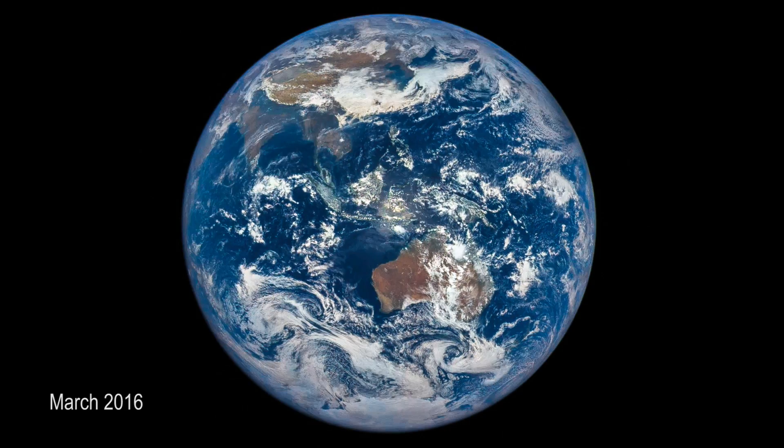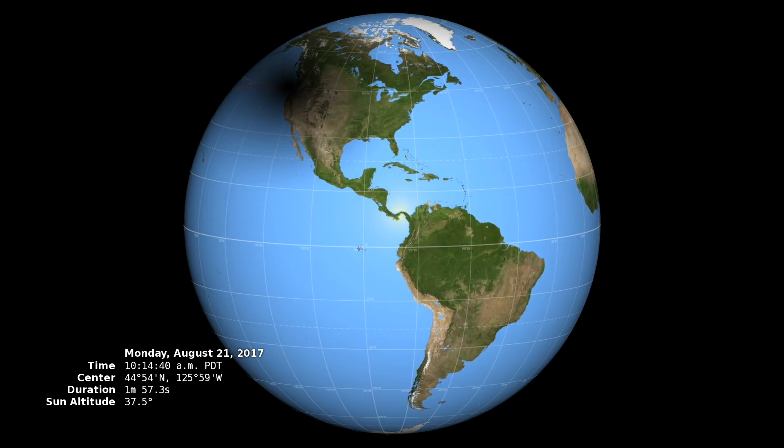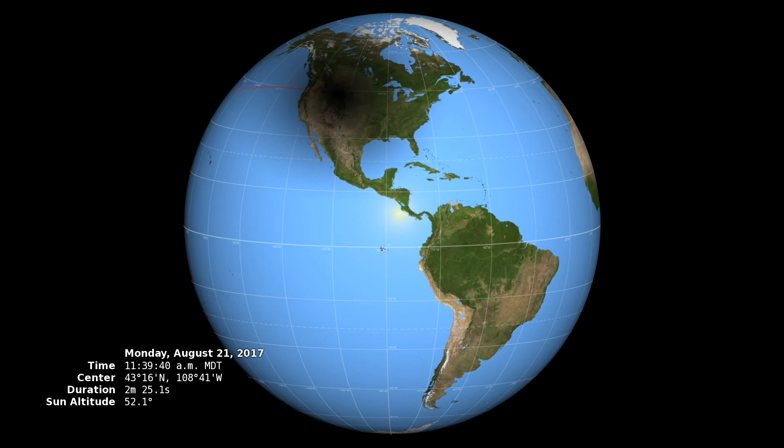NASA's Earth Polychromatic Imaging Camera, called EPIC, will capture images of the moon's shadow passing over Earth.